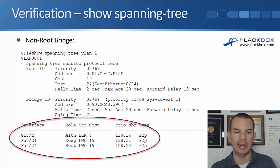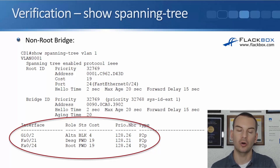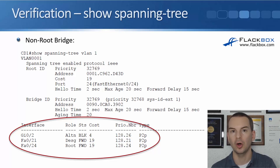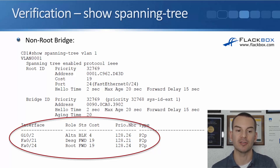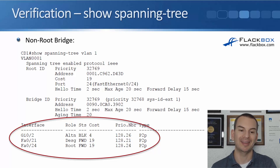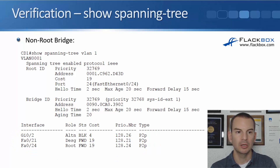At the bottom of the output I can see that interface Gig 0/2 has a role of 'alternate', meaning it is a blocking port — the port selected to block a potential loop. Interfaces FastEthernet 0/21 and 0/24 are designated and root ports respectively, and both are forwarding.